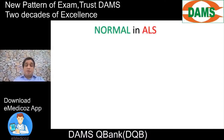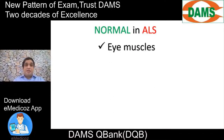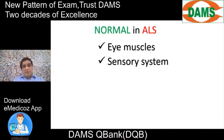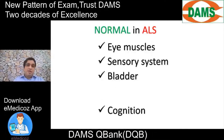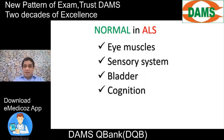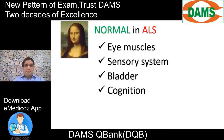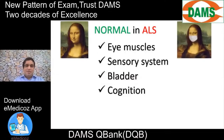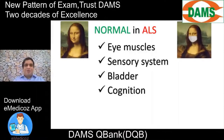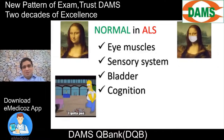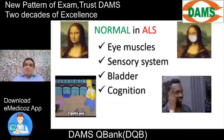Normal findings in ALS are very important. In spite of everything wrong, a few things remain normal: eye muscles are normal, the sensory system is perfectly normal, the bladder is normal, and cognition is well maintained. Like the Mona Lisa — wherever you look, she keeps looking at you — the ALS patient will always keep looking at you because of intact eye muscles, and they remain very intelligent people.